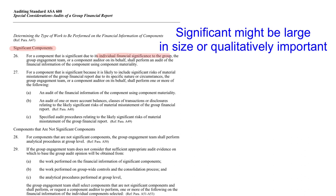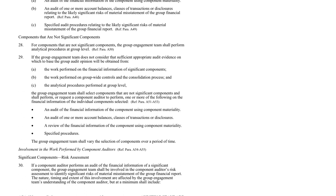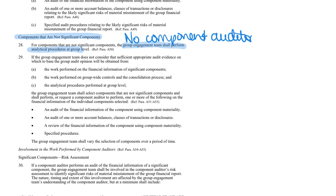If a component is significant — individually significant to the group — I have to audit it using the component materiality and follow all normal requirements for identifying potential risk. What happens if a component is not significant, not material, not large? Then we don't need a component auditor. The auditing standard says the group can just do analytical procedures at the group level. They still have to evaluate whether that is sufficient appropriate evidence, but the minimum they have to do is analytics. If there are risk areas, we might do more on financial information and control processes.